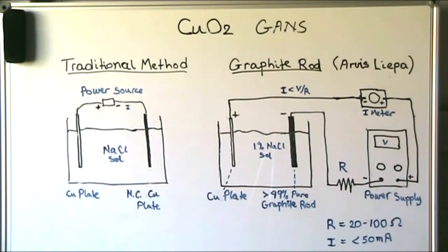This is one example where the two methods are actually fairly close as far as the power supply and current, etc. Mainly because in the traditional method we have two copper plates in a salt solution which means that the electrolytic potential difference between the two is zero. So you don't get that voltage which actually drives the current if you connect a wire between them. So therefore even with the traditional method we use generally a power source for producing copper oxide GANS.